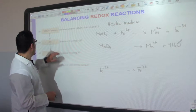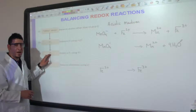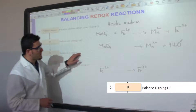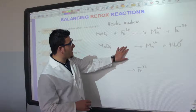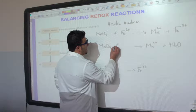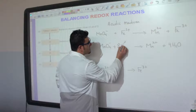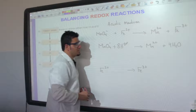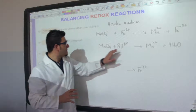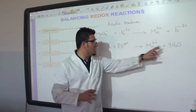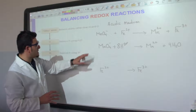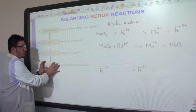Now we balance hydrogen by adding H⁺. We have no hydrogen on the left and eight hydrogen from the four water molecules on the right, so we add eight H⁺ to the left side. Manganese, oxygen, and hydrogen are now all balanced.